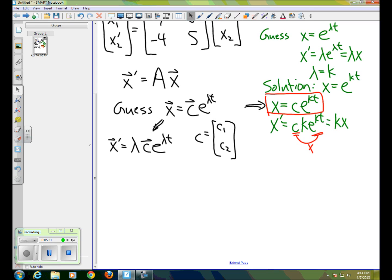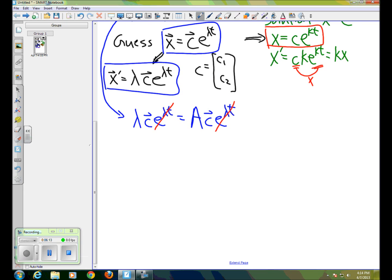So now if we put x, so here's x and here's x prime, let's put those in to the equation above. So what we have is lambda c e to the lambda t equals a times c e to the lambda t. Now, e to the lambda t is never zero, so we can divide both sides by it. And so what we end up with is the equation lambda c equals ac.